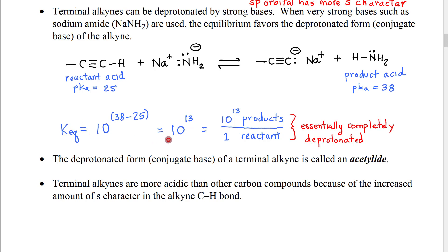38 minus 25 is 13. So K equilibrium would be equal to 10 to the 13th. The significance of this is that K equilibrium is actually a ratio. It's a ratio of the concentration of products divided by the concentration of reactants. So when we have a large positive exponent